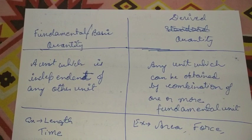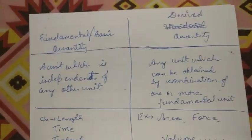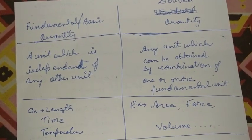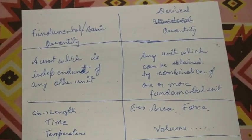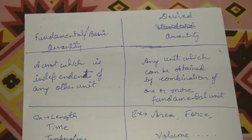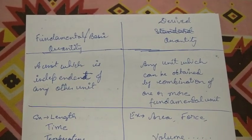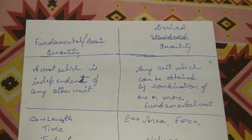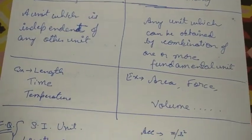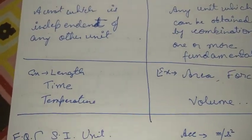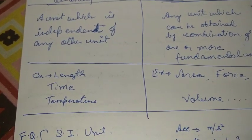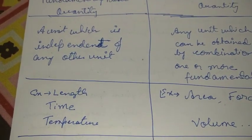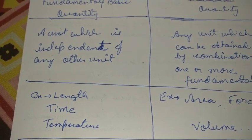There are basically two types of quantities: fundamental (or basic) quantities and derived quantities. A fundamental unit is independent of any other unit. For example, to measure length, we simply use a scale and write down the value — say 2.5 or 3.7 centimeters — without depending on any other parameter. Examples of fundamental quantities are length, time, and temperature. Whenever we have to take a temperature, we directly use a thermometer and get the value. Similarly, time can be directly measured in seconds, minutes, or hours.